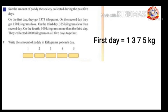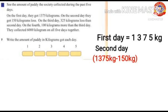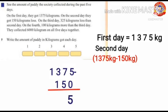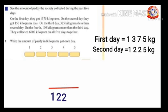1375 minus 150: 5 minus 0 is 5, 7 minus 5 is 2, 3 minus 1 is 2, and 1 is here — 1225. Paddy collected on the second day equals 1225 kilograms. On the third day, 325 kilograms less than the second day.